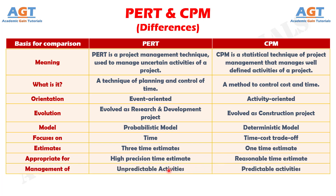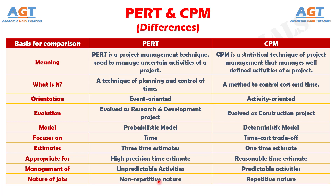Number 9: PERT deals with unpredictable activities, but CPM deals with predictable activities. Number 10: PERT is used where the nature of the job is non-repetitive, whereas CPM involves the job of repetitive nature.